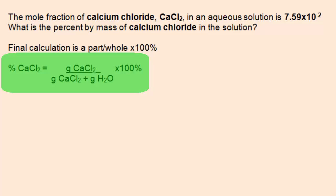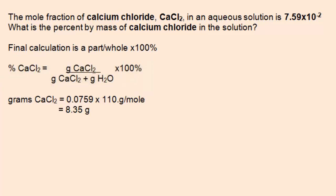So the final calculation will be mass of calcium chloride over the total mass of the solution. We can use the mole fraction of calcium chloride to calculate the grams of calcium chloride in the solution.